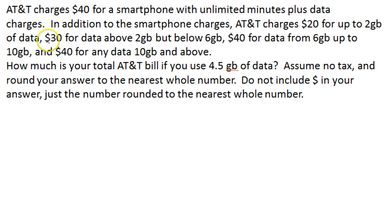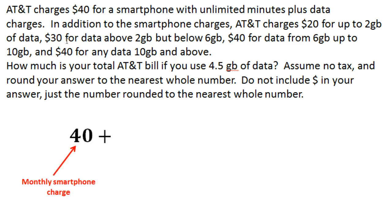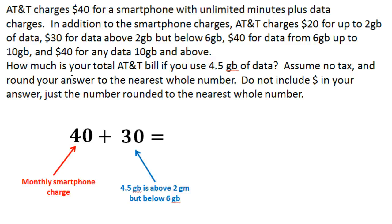So let's see — if it's up to 2 gigabytes of data, if it is 2 gigabytes to 6 gigabytes, that is where we're at. We're at 4.5, so from 2 to 6, that definitely falls in this range. That means it's an additional $30. So I take my monthly cell phone charge, which is $40, and I'm going to add this $30 to that. 4.5 gigabytes is above 2 but below 6 gigabytes. So 40 plus 30 gives us a total of $70.